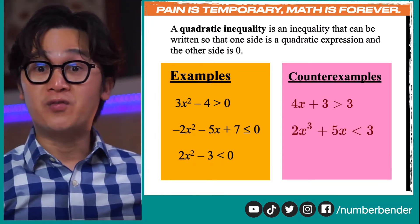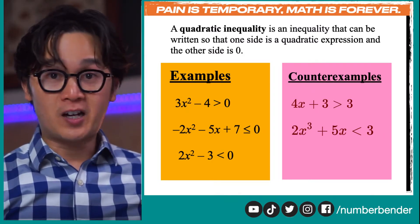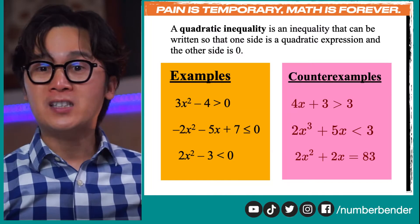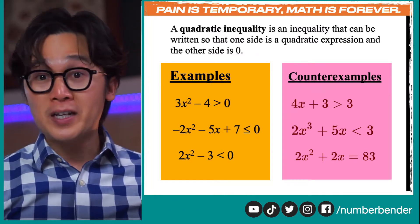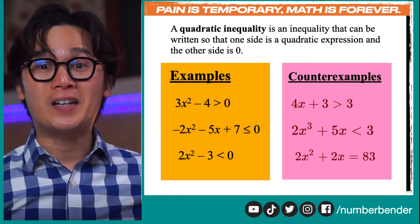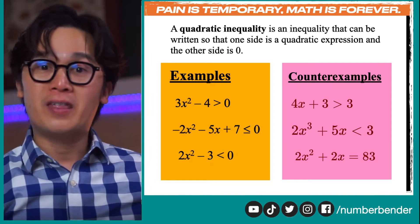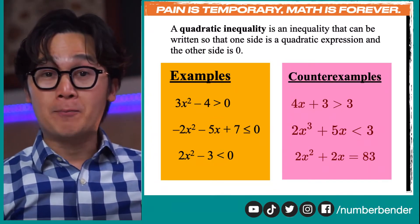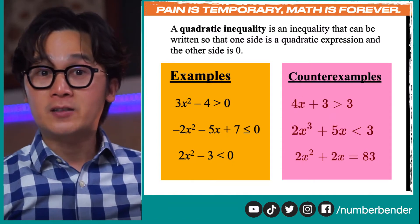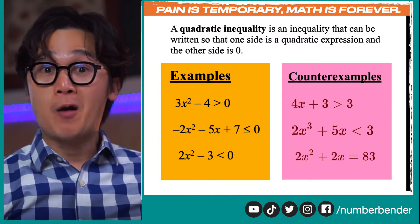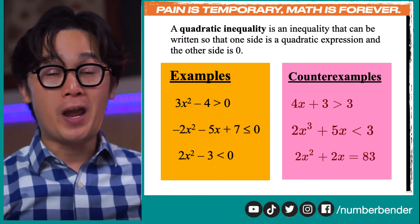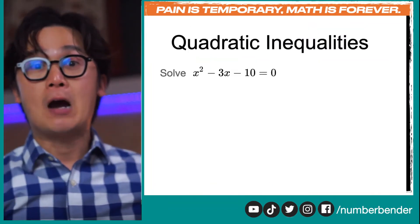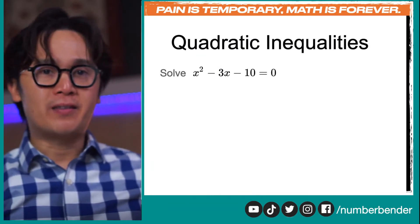Another counterexample is 2x cubed plus 5x less than 3 — this is a cubic inequality, not quadratic. And 2x squared plus 2x equal to 83 is quadratic but not an inequality because it uses an equal sign. So the highest exponent must be 2, and we must see a less than, greater than, less than or equal to, or greater than or equal to symbol.